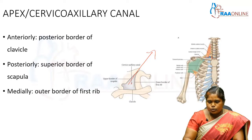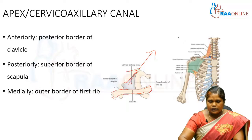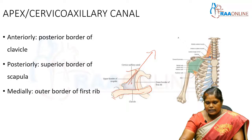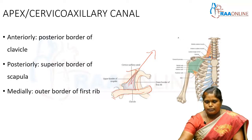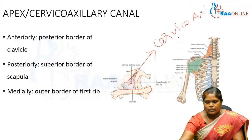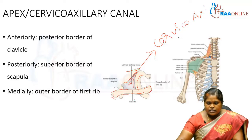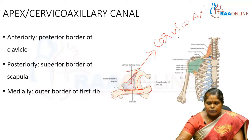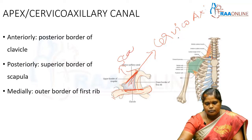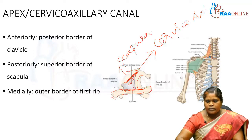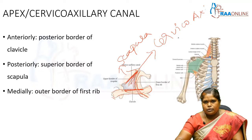Here we can see some bones. This is the clavicle, and we can see here the part of the scapula, and medially we can see the first rib. This space — the cervico-axillary canal or apex — is bounded anteriorly by the posterior border of the clavicle, behind it is formed by the superior border of the scapula, and medially we can see the first rib, so the medial boundary is the outer border of the first rib.